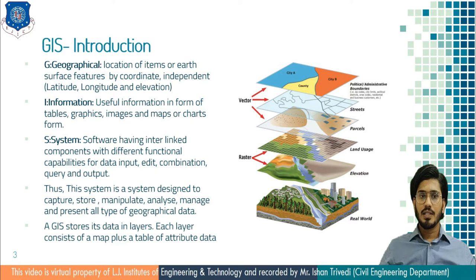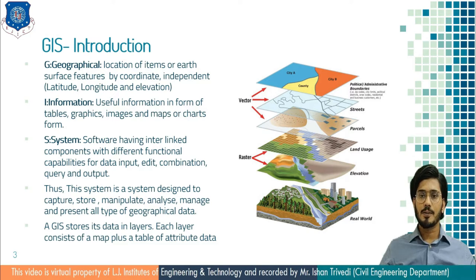Thus, GIS is the system designed to capture, store, manipulate, analyze, manage and present all types of geographical data. A GIS stores its data in different layers. Each layer consists of a map plus a data attribute table.